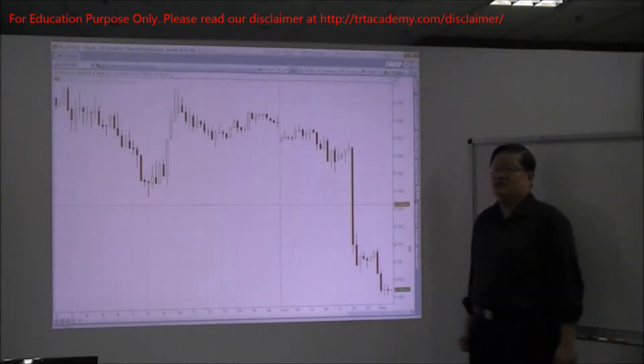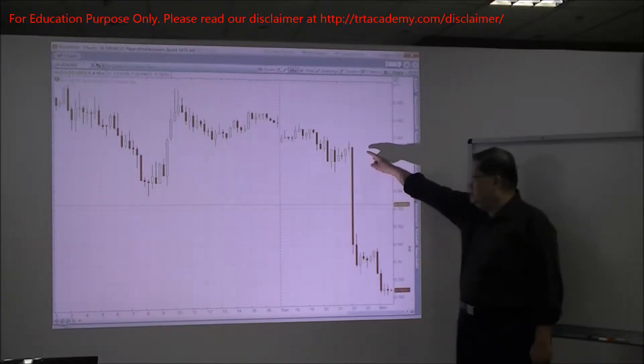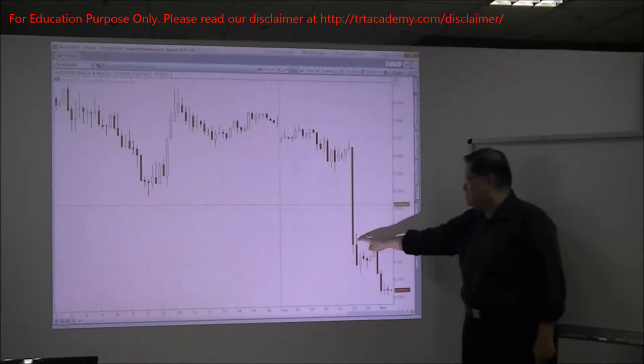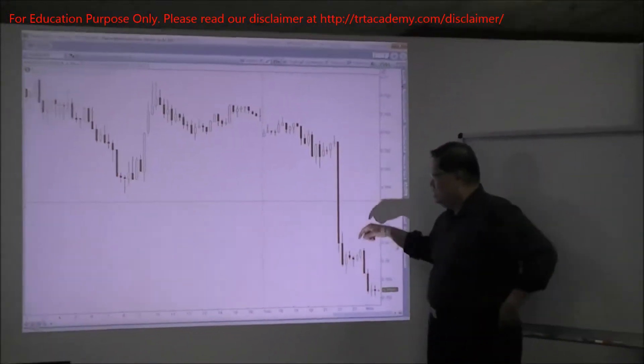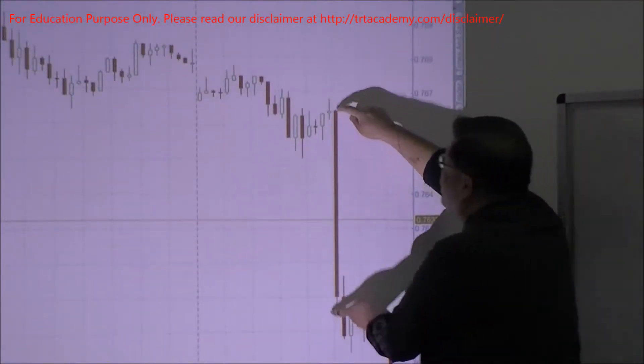This is a chart of Aussie US. You can see from here, this is what we call an ultra superman bar. What is an ultra superman bar? As you can see, it's the depth, the length of time. If you think it's long, you can put it down here.